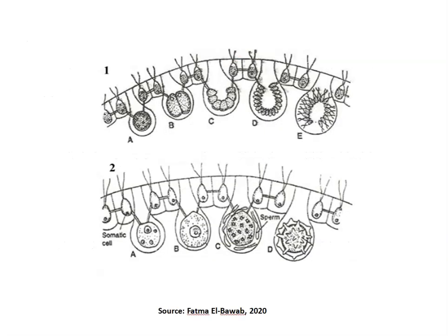Looking at the diagrams: In the sexual reproduction diagram, diagram A shows the antheridium. Diagrams B to C show stages of sperm development. In the second diagram, A shows the oogonium with an immature egg, B shows it with a mature egg, C shows fertilization, and D shows it containing an oospore. Thank you.